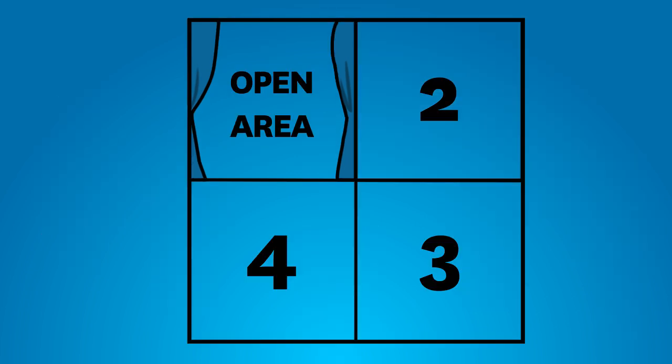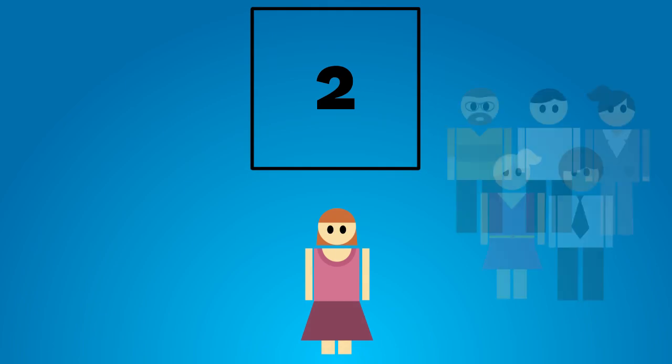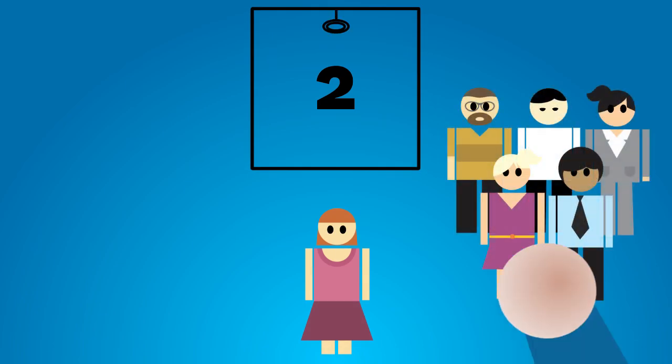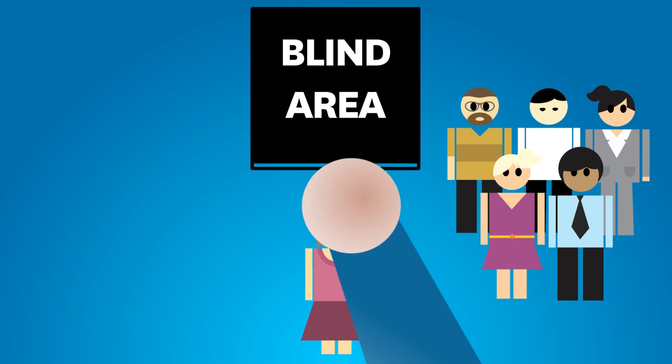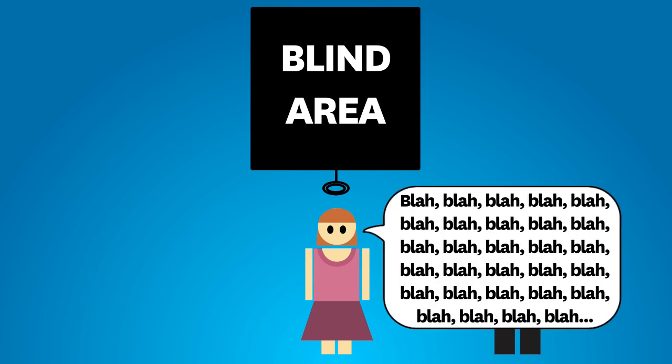Area 2 is the blind area. It represents information that Joe doesn't know, but other people do. This could be information that she doesn't yet realize, like that she talks way more than she listens, and she jumps in on conversations before letting people make their point.